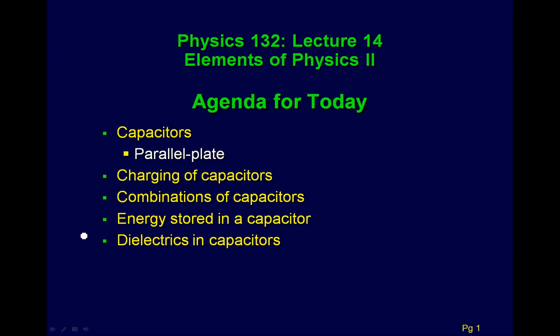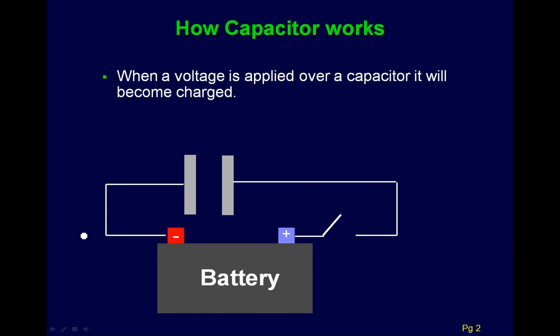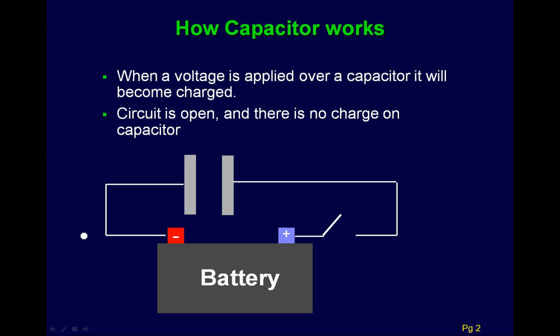Today we're going to finish up Chapter 29 talking about capacitors. Here's a picture of a capacitor in a circuit hooked up to a battery. This is what we call a switch, and it just allows us to either turn on or turn off the circuit.